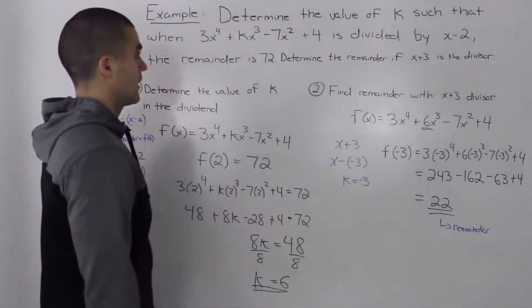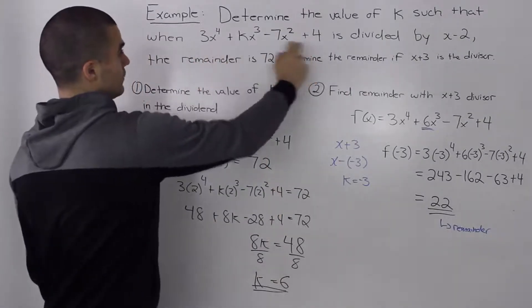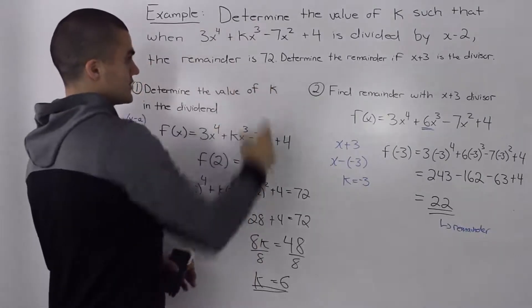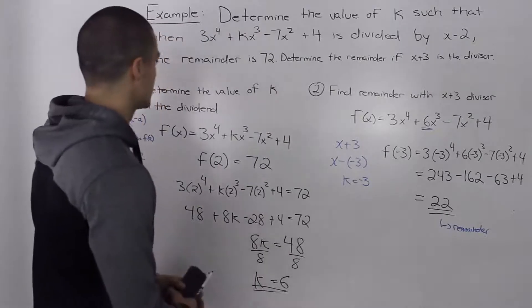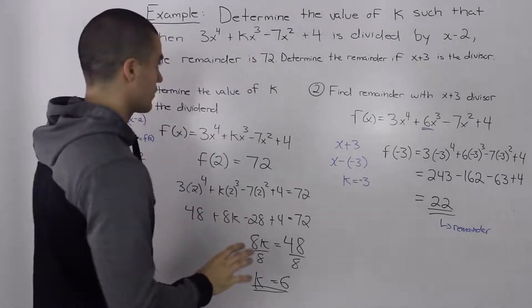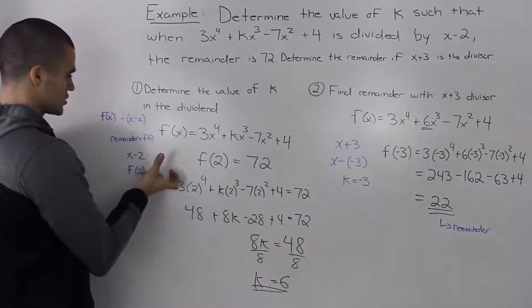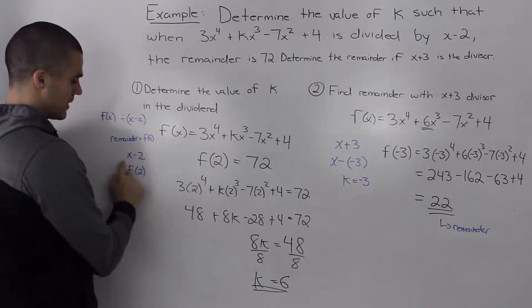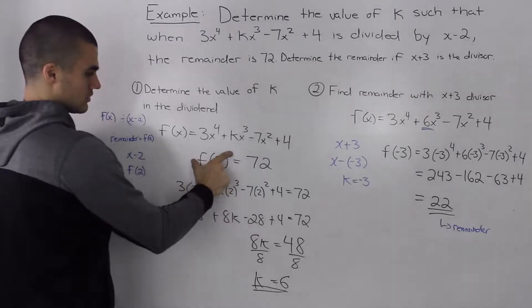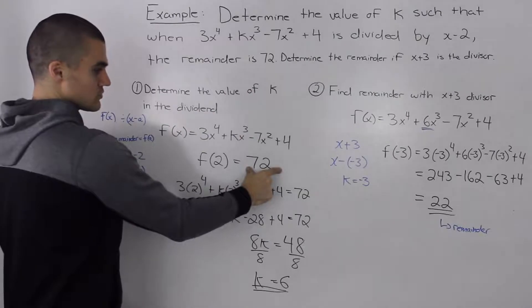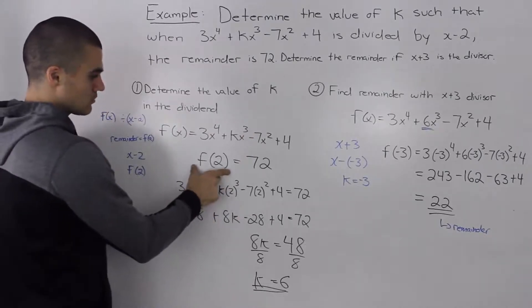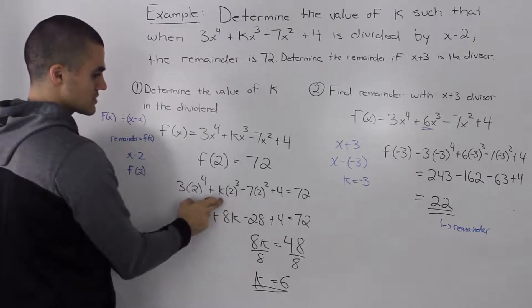So let's do a quick recap of what happened here. So we were given a dividend with a missing leading coefficient, and we were told that if it's divided by x minus 2, the remainder is 72. And then we have to determine the remainder when x plus 3 is the divisor. So we first start off by finding the k value in the dividend. And we can do that using the remainder theorem. So basically, since our divisor is x minus 2, our remainder then we can find by plugging in 2 for the x values in the dividend, or just having f of 2. So f of 2 represents the remainder using the remainder theorem, and we're told that it's equal to 72. So writing this equation here is critical because it lets you know what you have to do. So now all we do is we take our dividend, plug in 2 for the x values, and then solve for our k.